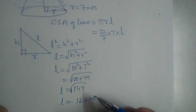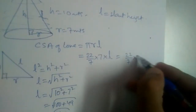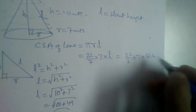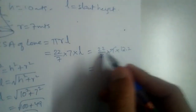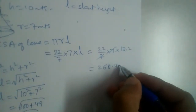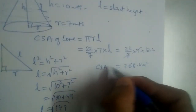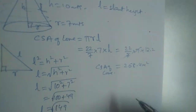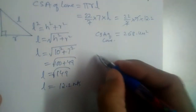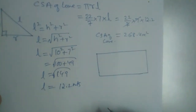Now let us substitute L = 12.2 into the formula: 22/7 × 7 × 12.2. The two 7s cancel, giving 22 × 12.2 = 268.4 meters squared. This is the curved surface area of the cone.